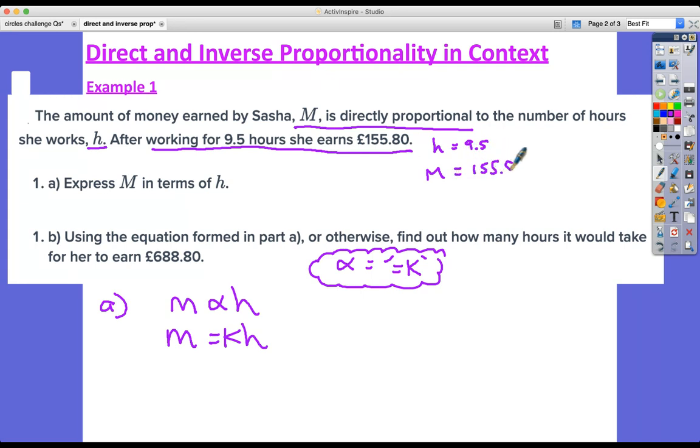So we know that when h equals 9.5, M, the money earned, is equal to 155.80. So we can start to put those values in and work out what k is. So 155.80 equals k times 9.5. And from there we can work out the value of k, so it's going to be 155.80 divided by 9.5, which equals 16.4.